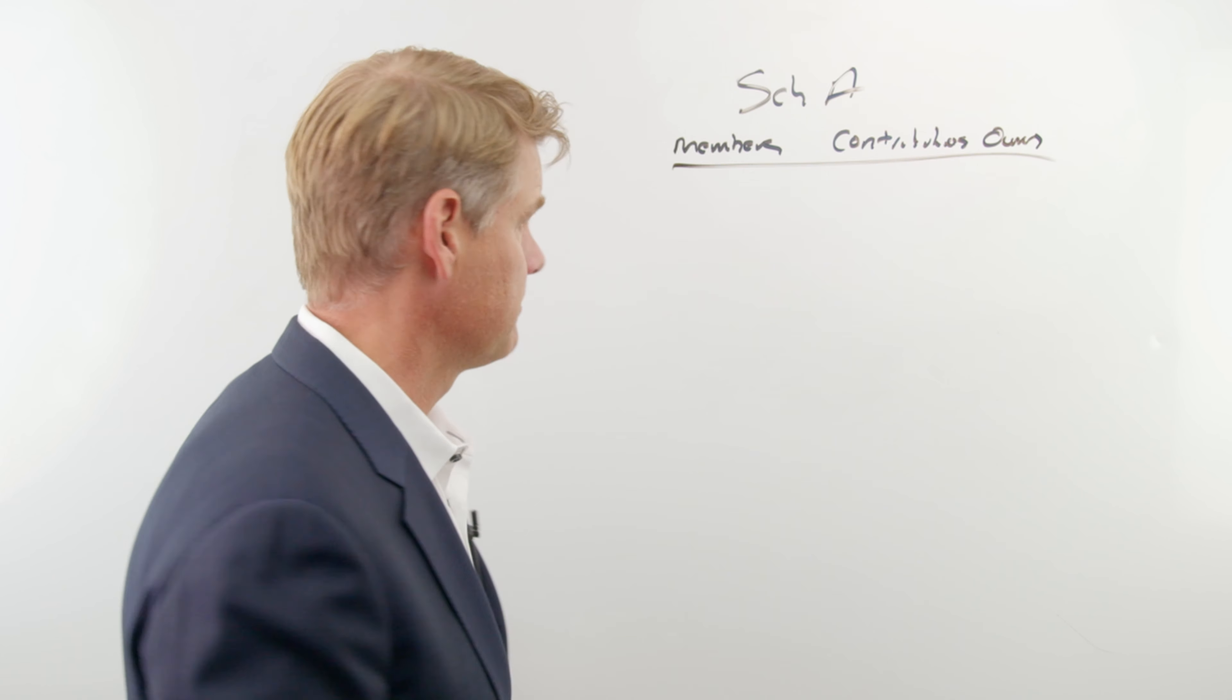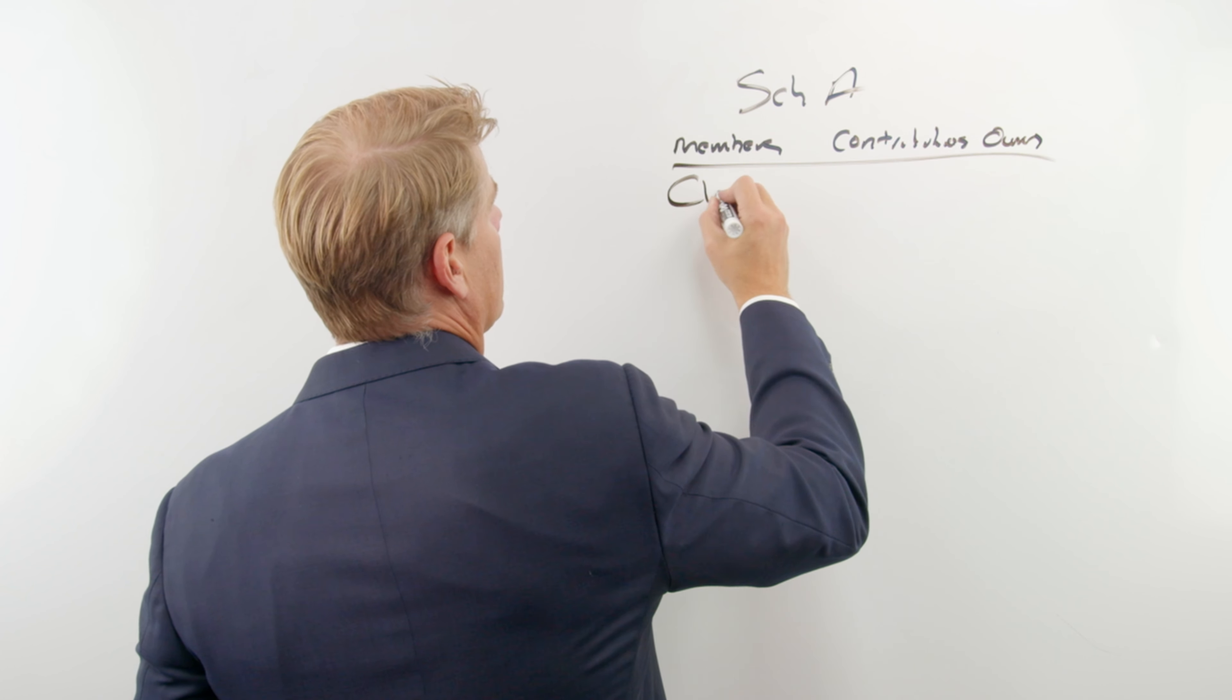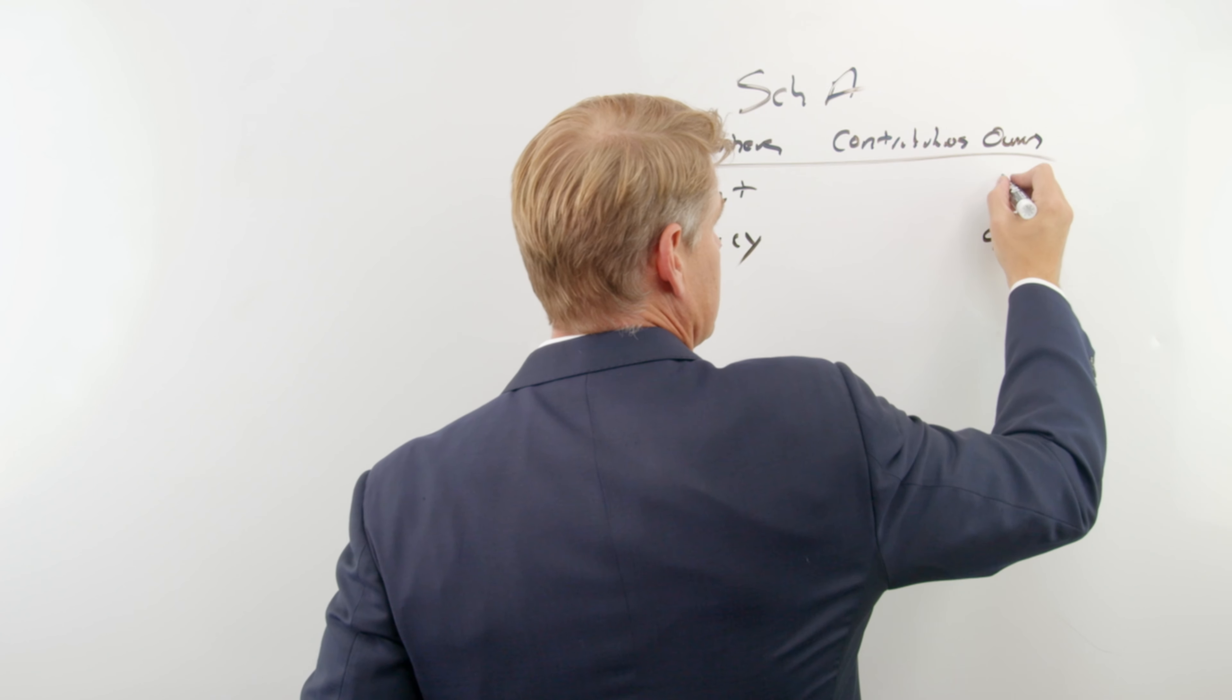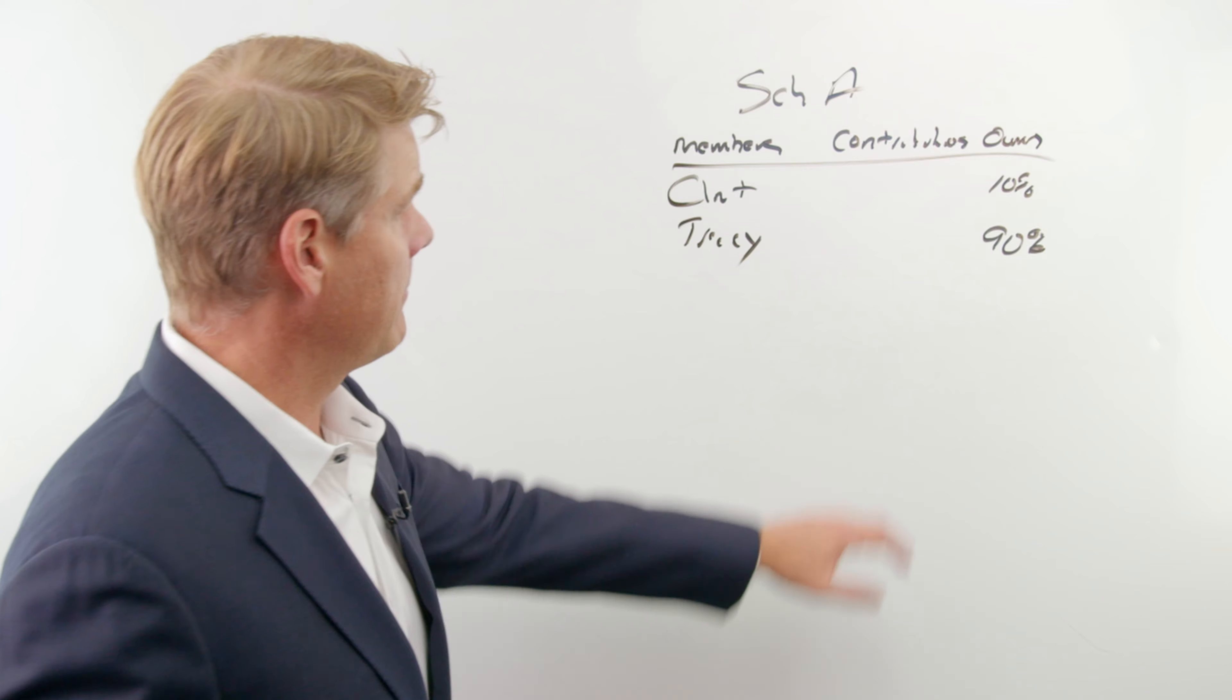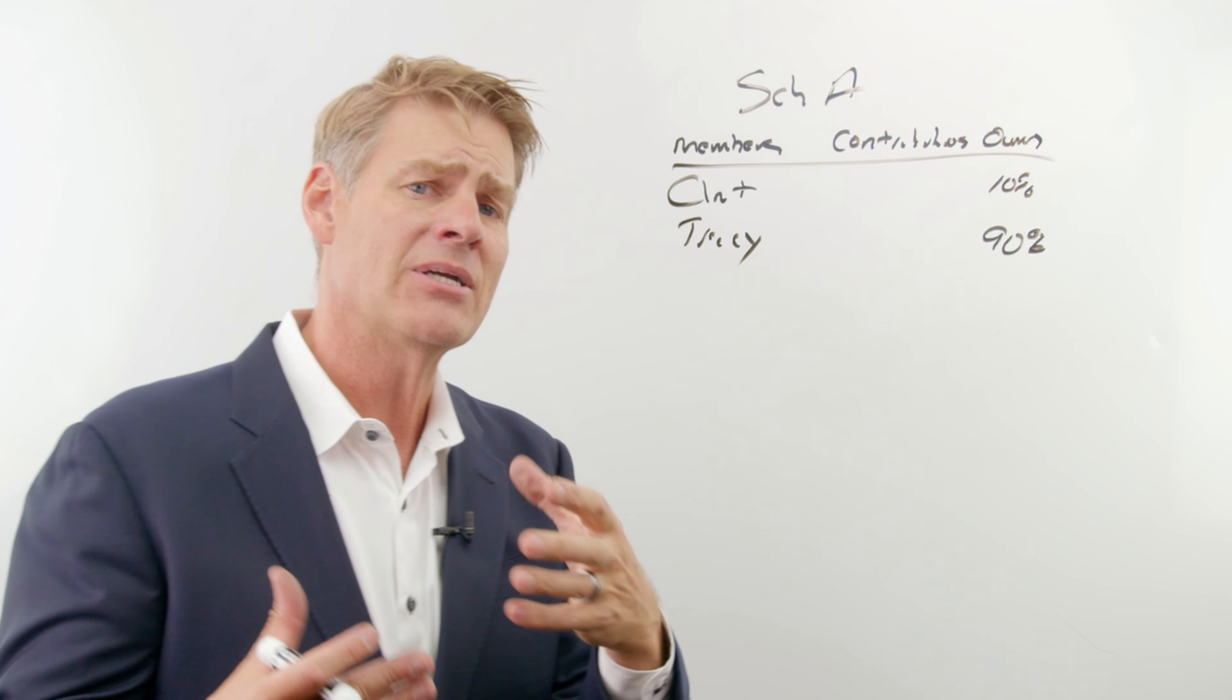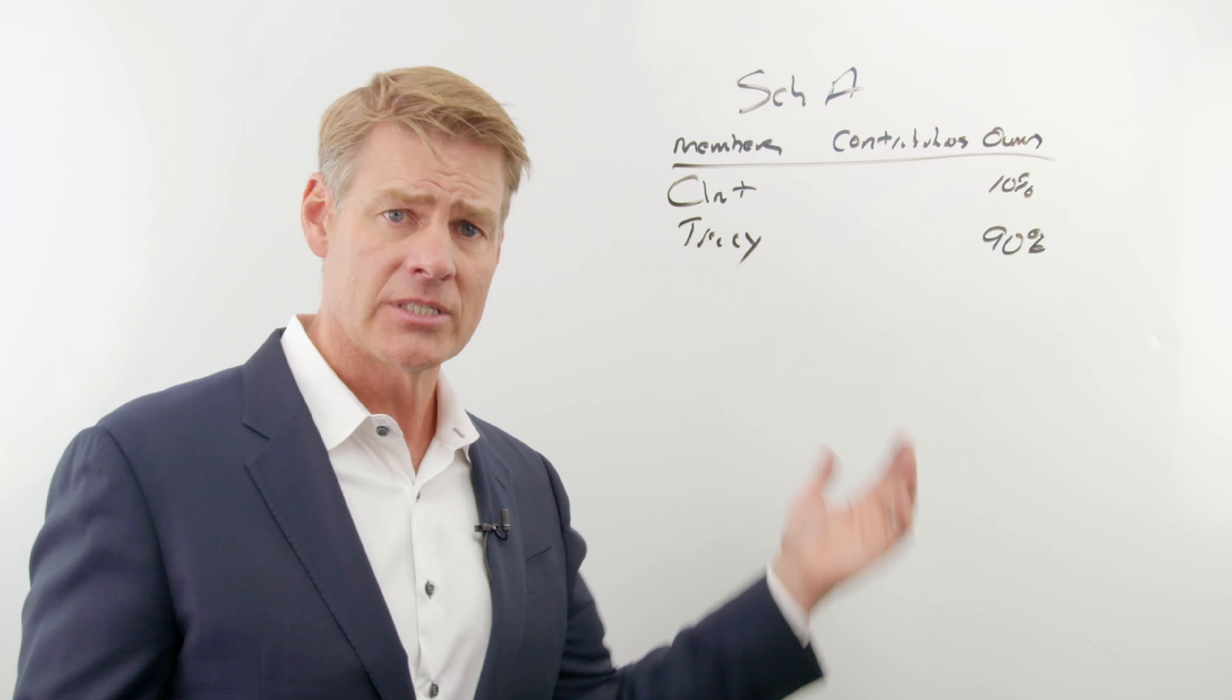So for example, let's assume that I set up an LLC for myself and my wife, and we put our names down here, Clint, Tracy. And ownership, well, of course, she's gonna step in and say she owns 90%, I only get 10%. So happy wife, happy life. She gets the 90%, I got my 10%. Now the contribution, how much did you contribute to this LLC? If I put in real estate, you'd list the real estate you contributed.